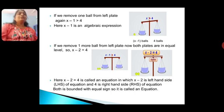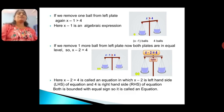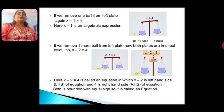If we remove one more ball from the left plate, now both plates are at an equal level. So x minus 2 is equal to 4. Here, x minus 2 equals 4 is called an equation, in which x minus 2 is the left hand side (LHS) of the equation and 4 is the right hand side (RHS) of the equation. Both sides are bounded with an equal sign, so it is called an equation.